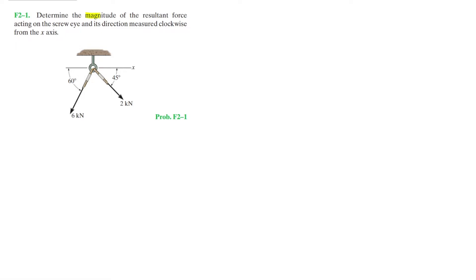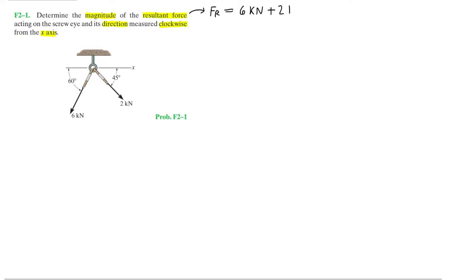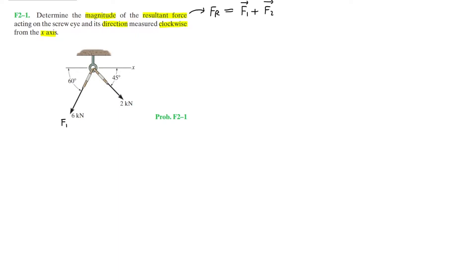Problem F2-1 asks us to determine the magnitude of the resultant force acting on the screw eye and its direction measured clockwise from the x-axis. Since we're trying to find the resultant force created by these two forces, we'll apply vector addition: FR equals the 6 kilonewton force plus the 2 kilonewton force, or FR equals force vector F1 plus force vector F2, where F1 is the 6 kN force and F2 is the 2 kN force.